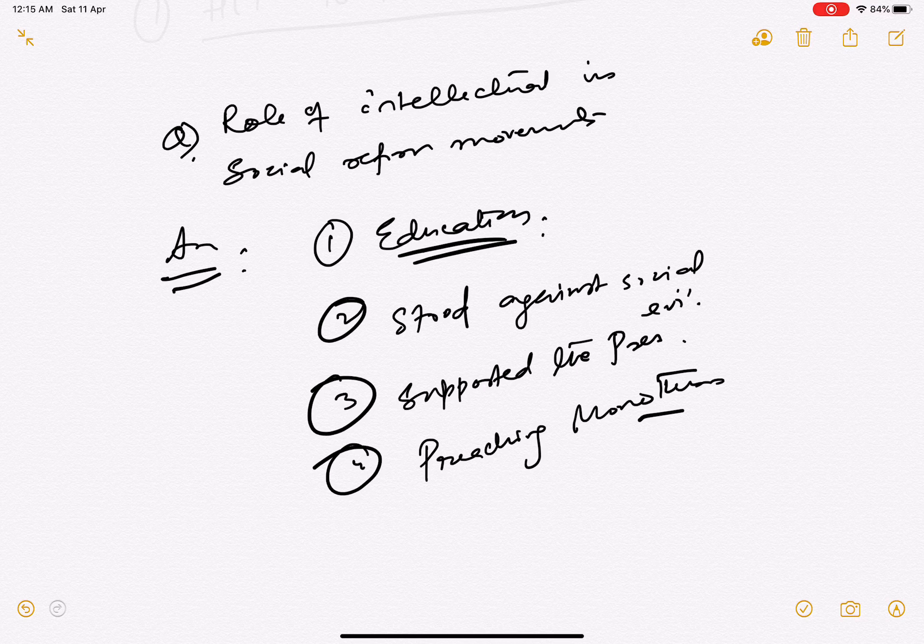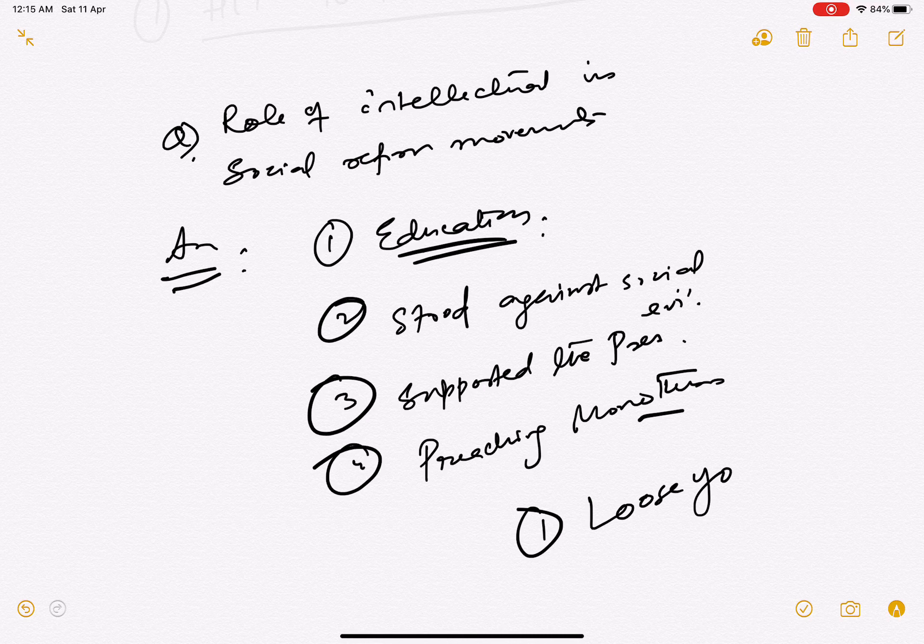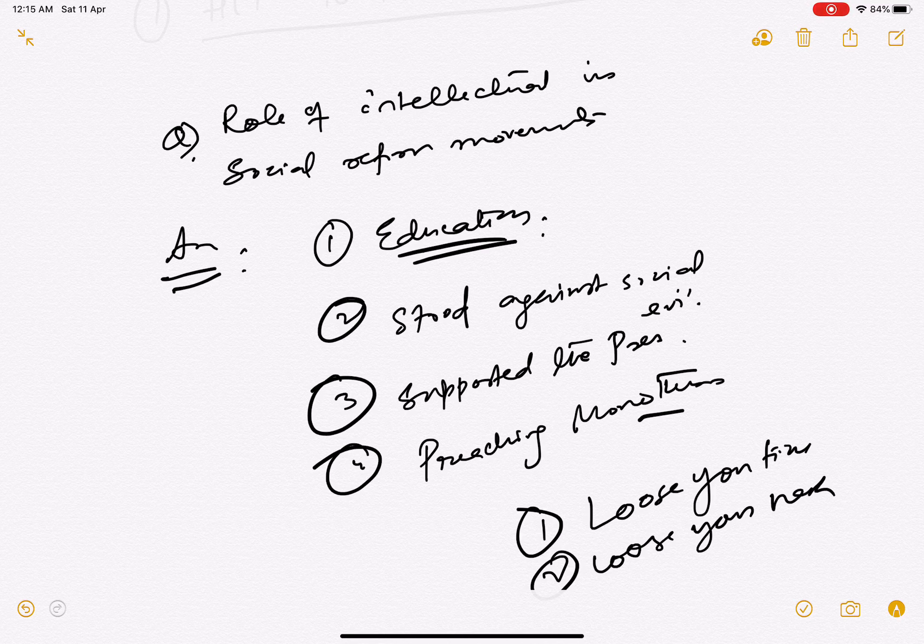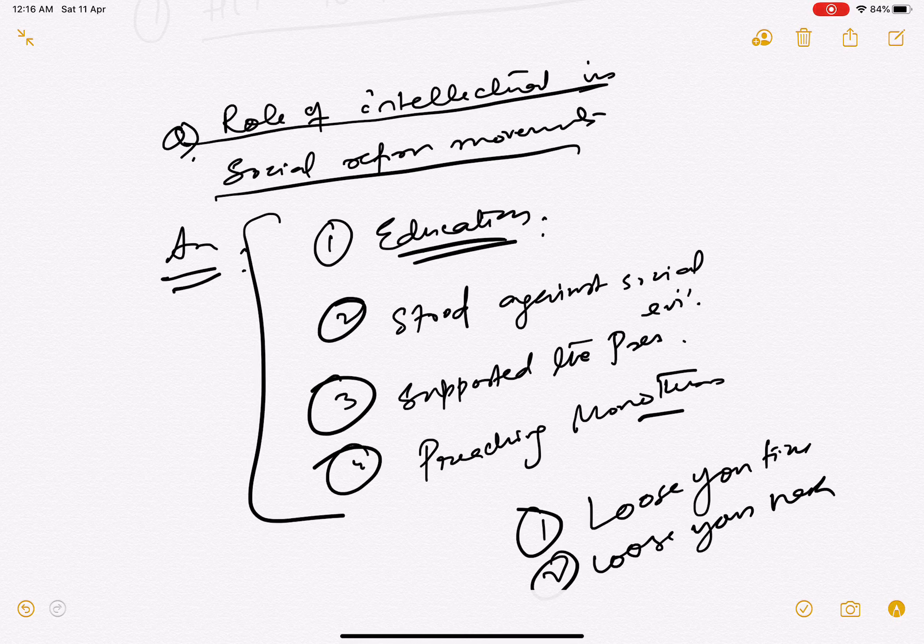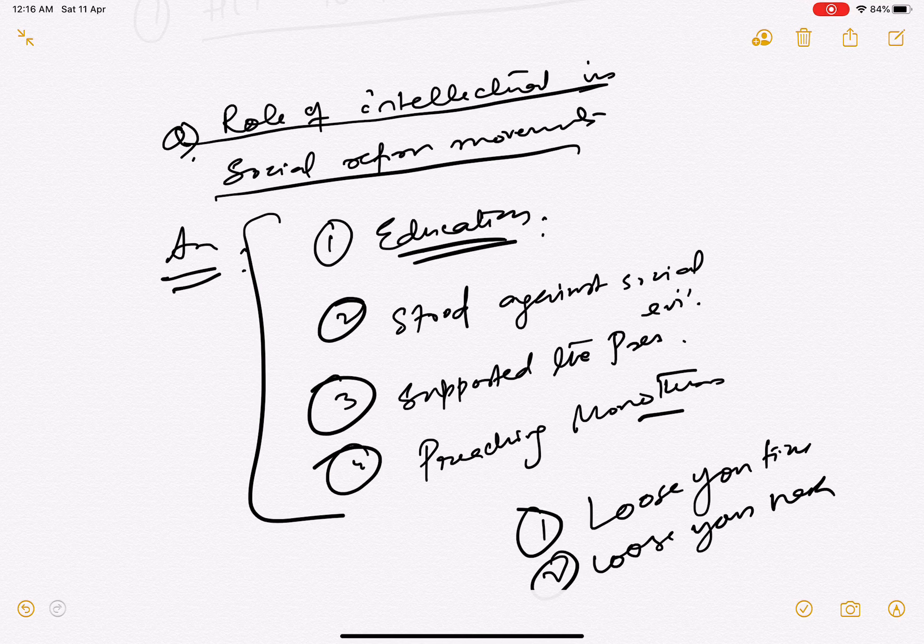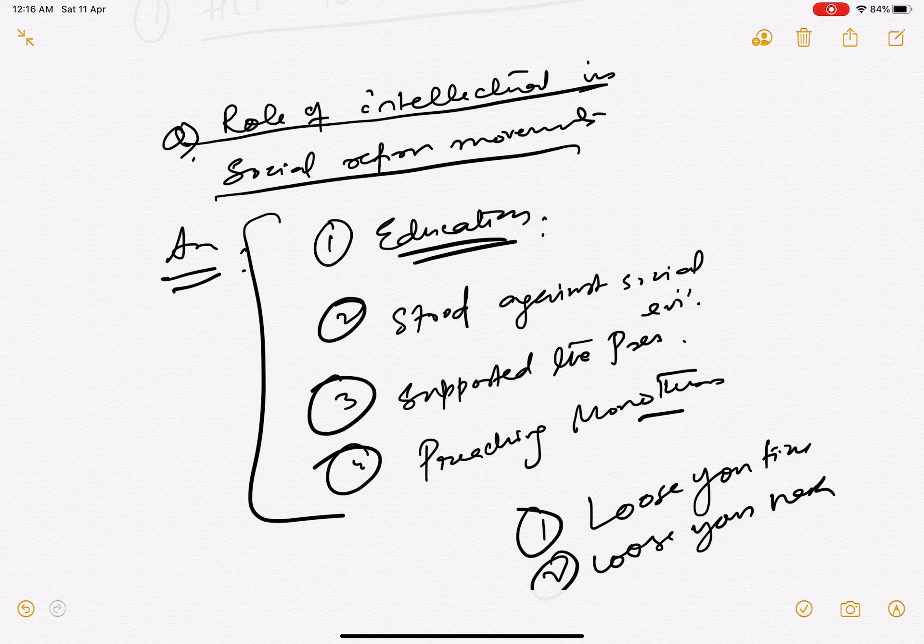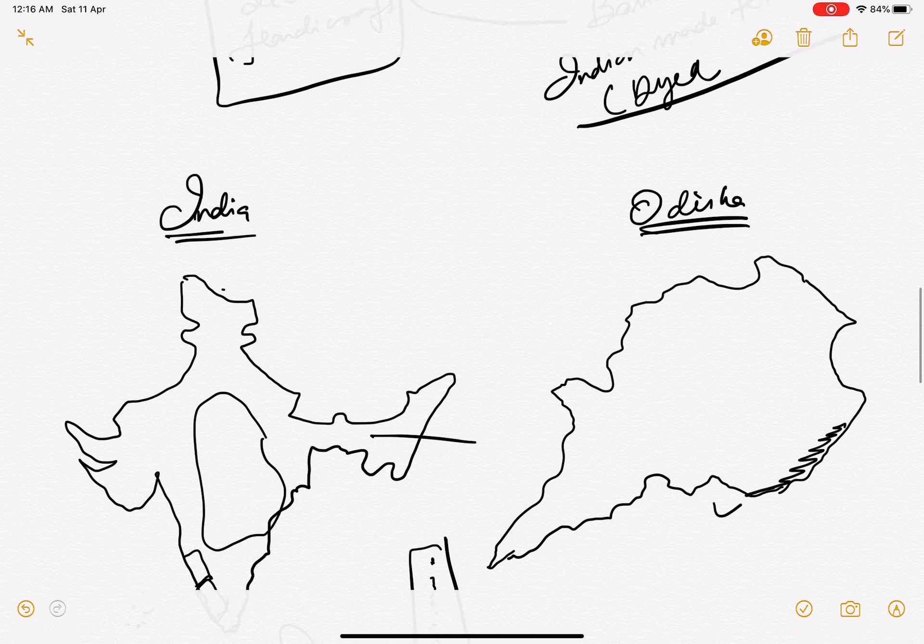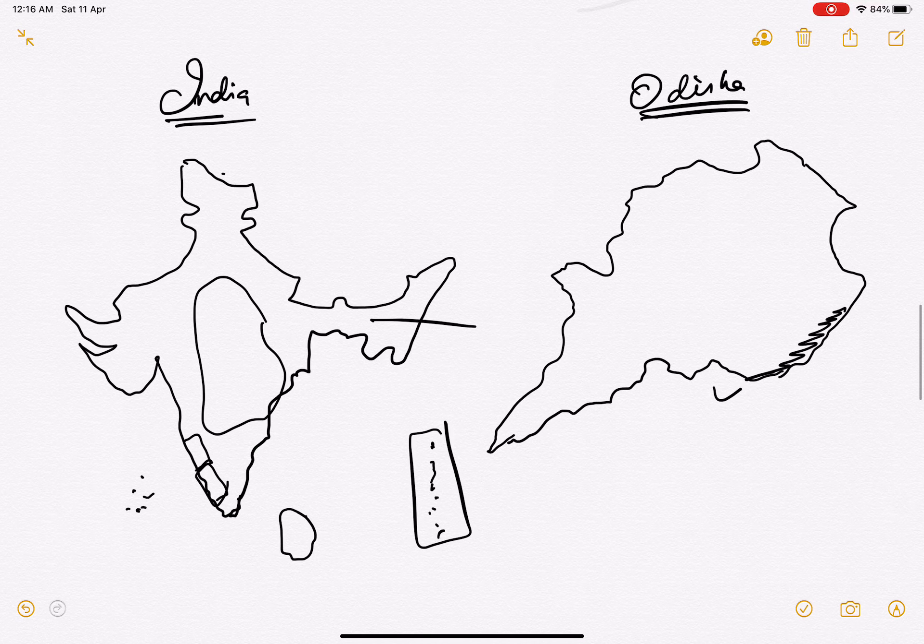Hit to the point. Don't go round and round. Moving round and round will do nothing but you will lose your time. How difficult is it to say that the role of the intellectuals in the social reform movement were this, this, and this? Isn't it easy? But why do we make it complicated? Remember that in answer writing, please do not make answers complicated. Make it as simple as possible. It is the simplicity that will give you the marks, not the complexity. Never put in mind that writing high sounding words will give you big marks. No, that's bullshit.